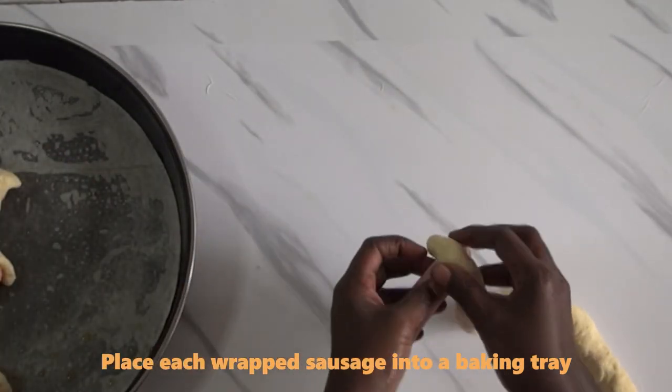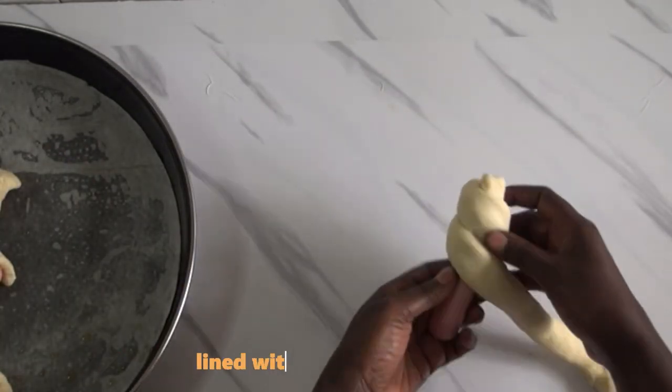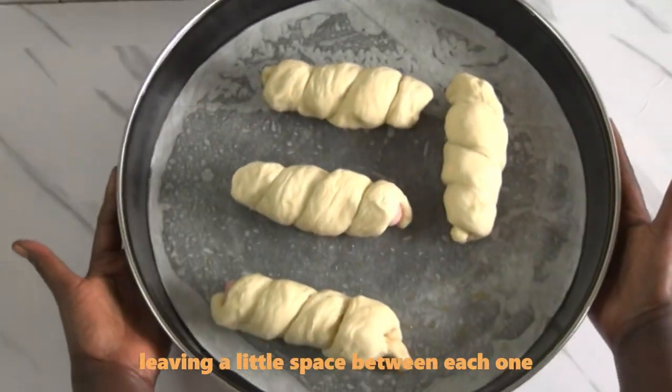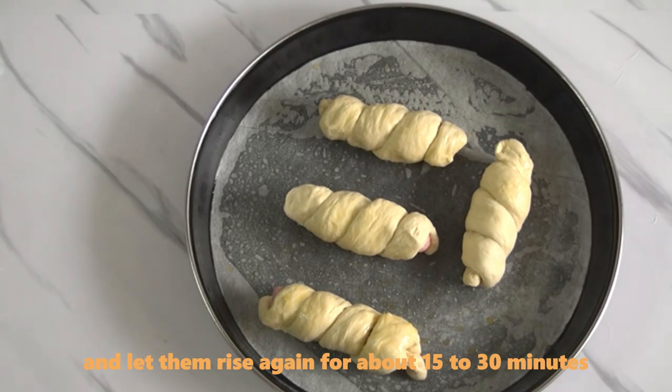Place each wrapped sausage onto a baking tray lined with parchment paper, leaving a little space between each one. Cover them with a cloth and let them rise again for about 15 to 30 minutes.